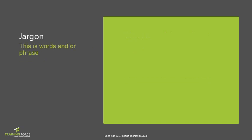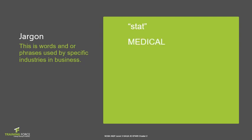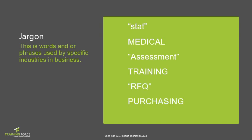Jargon is words and phrases used by specific industries in business. For instance, the word 'stat,' which you've probably heard before, is used very often in the medical profession to mean immediately — 'come now' or 'do this now.' In the training environment, words like 'assessment' are another term for examinations or tests. And in purchasing or a business environment, we get the term RFQ — which is an acronym for 'request for quotation,' widely used in purchasing and buying departments.